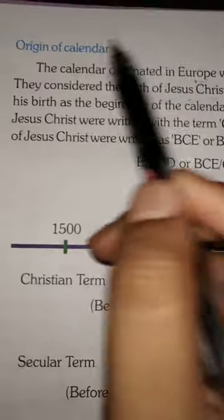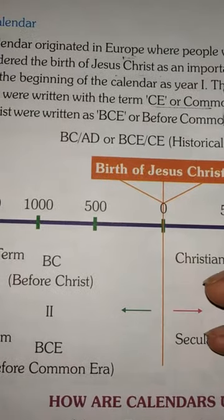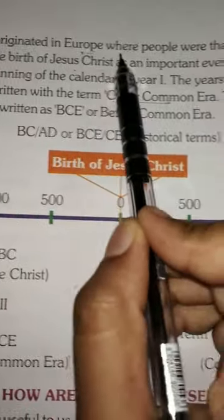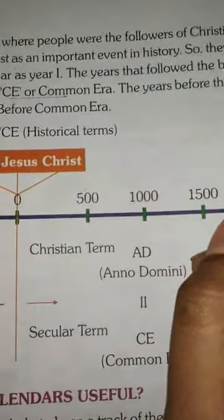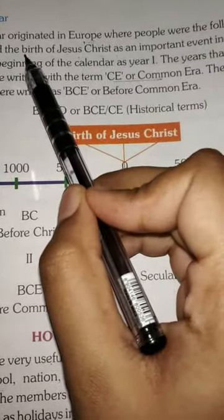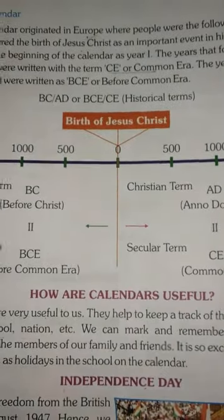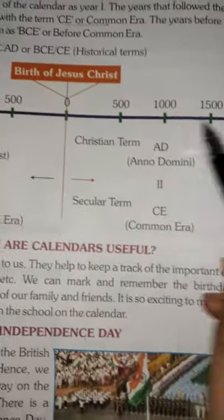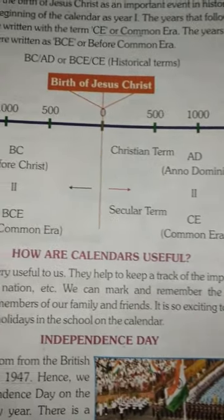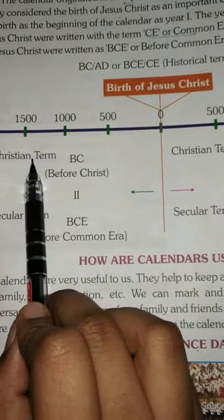Starting with the origin of calendar — earlier we studied about the history of calendar. We saw that it was introduced in Europe where people were related to the Christian community. They considered the birth of Jesus Christ as an important event, and named CE to the years after the birth of Jesus, and BCE — Before Common Era — to the years before the birth of Jesus.